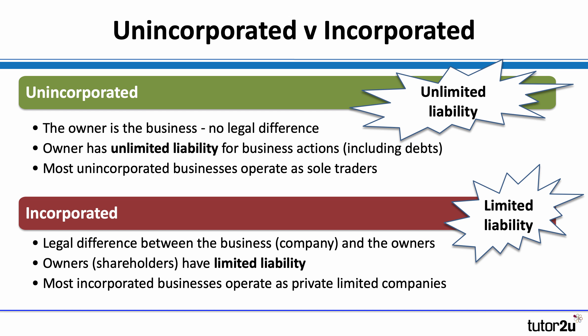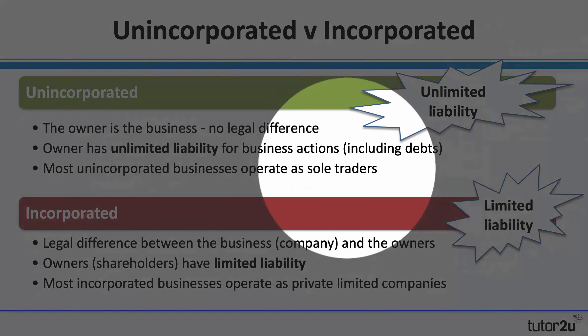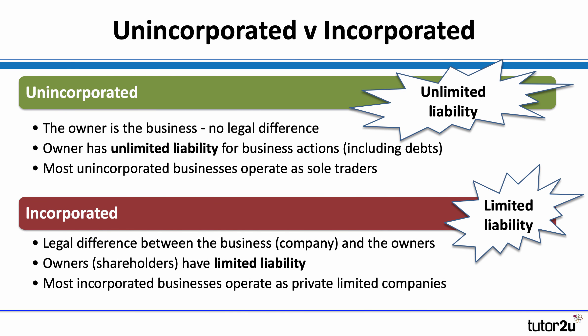This is important, so it might be worth pausing the video to jot down some notes. Unincorporated businesses: the essence is that the business is the owner. There is no legal difference between the owner of the business and the business. As a consequence of that, the owner of the business is liable for the business's actions, including its debts. The owner has what's known as unlimited liability for the debts of the business.